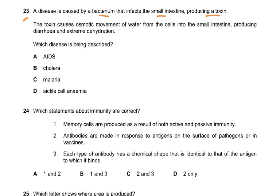Question 23: a disease is caused by a bacterium that infects the small intestine, producing a toxin. The toxin causes osmotic movement of water from the cells into the small intestine, producing diarrhea and extreme dehydration. This is clearly cholera — that is one of your syllabus points.